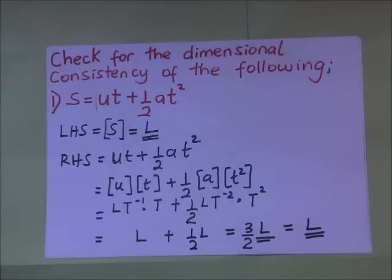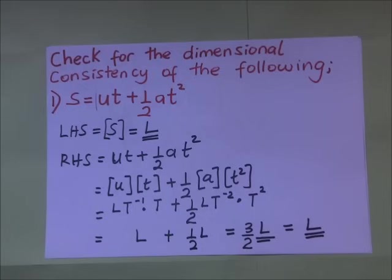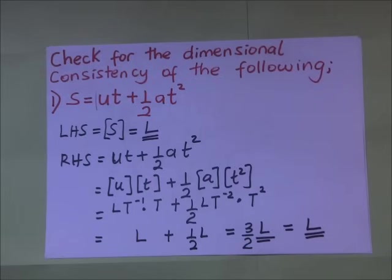In our previous video we showed how derived quantities relate to the fundamental quantities of mass, length, and time, and we derived how area, volume, velocity, acceleration, and force relate to physical quantities. In our conclusion we said that we use the dimensions of a physical quantity to check for the consistency of equations and also to derive equations. In this video we shall concern ourselves with how we use dimensions to check for the consistency of equations.